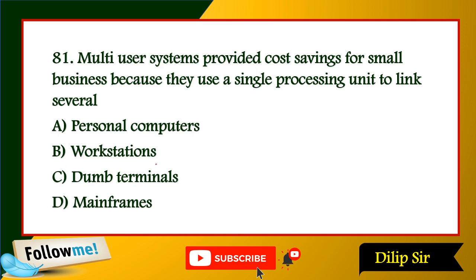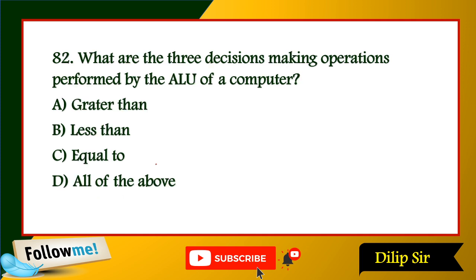What are the three decision-making operations performed by the ALU? Greater than, less than, and equal to.